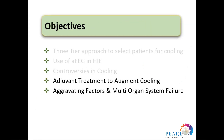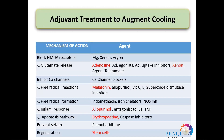Regarding treatments to augment cooling: here we use cooling as a baseline and add on substances that might ameliorate or help the therapeutic hypothermia. These include adenosine, xenon, melatonin, erythropoietin, and stem cells — some of which are starting to show promising results.